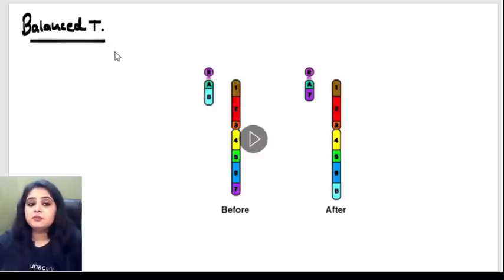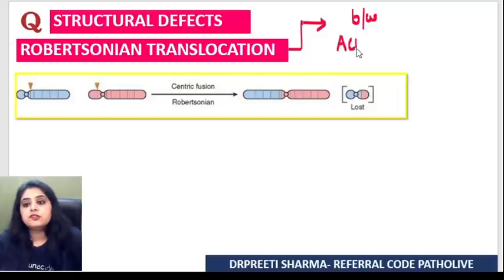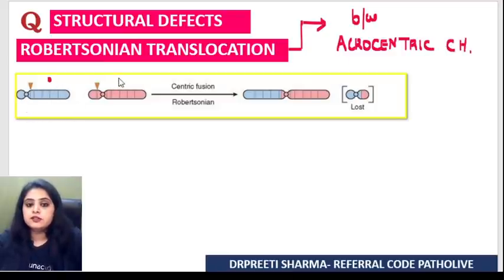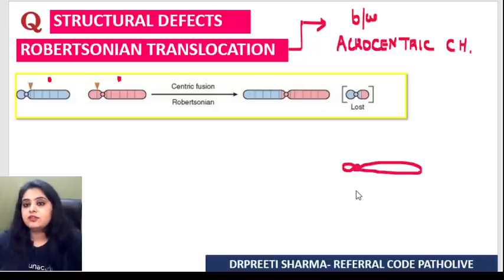There's another very famous translocation — Robertsonian translocation. Robertsonian translocation happens between acrocentric chromosomes. Looking at these chromosomes here, both are acrocentric. An acrocentric chromosome is one where the centromere is almost at the tip, just at one end.